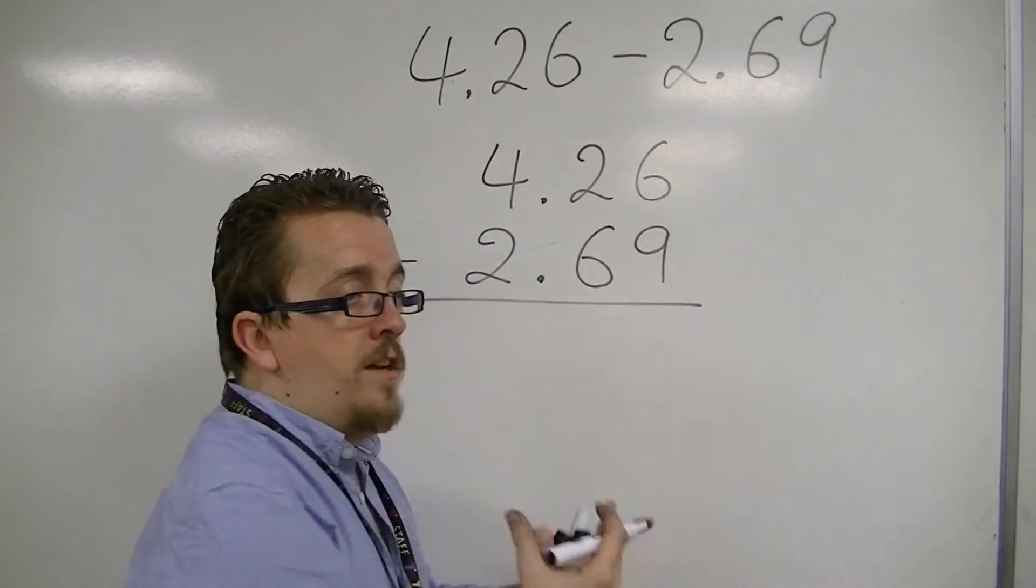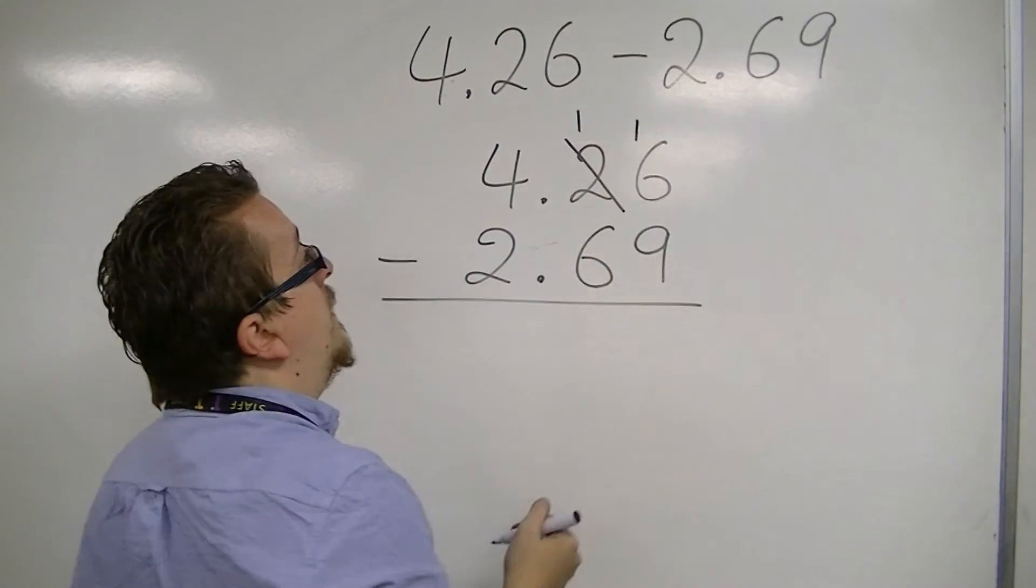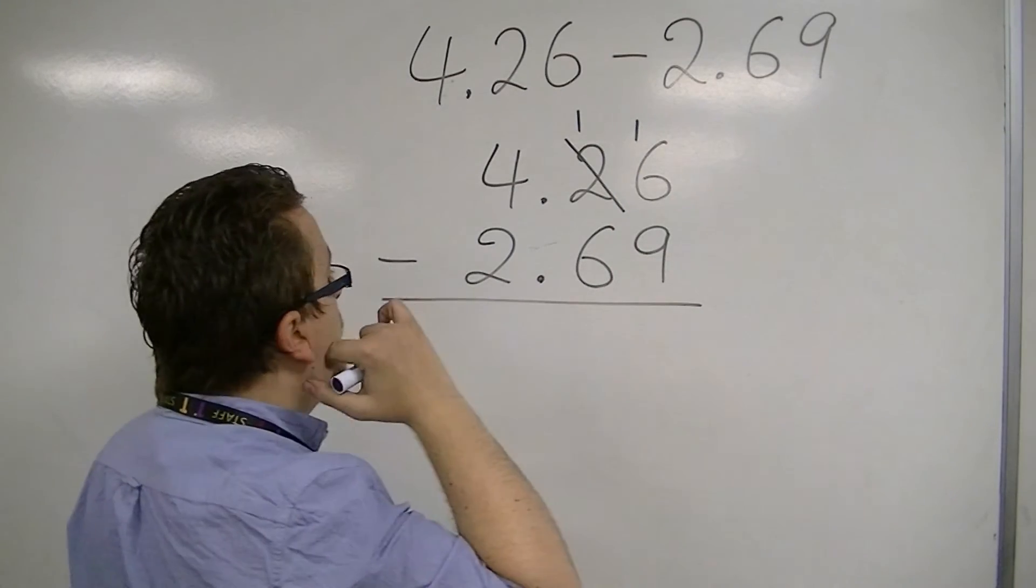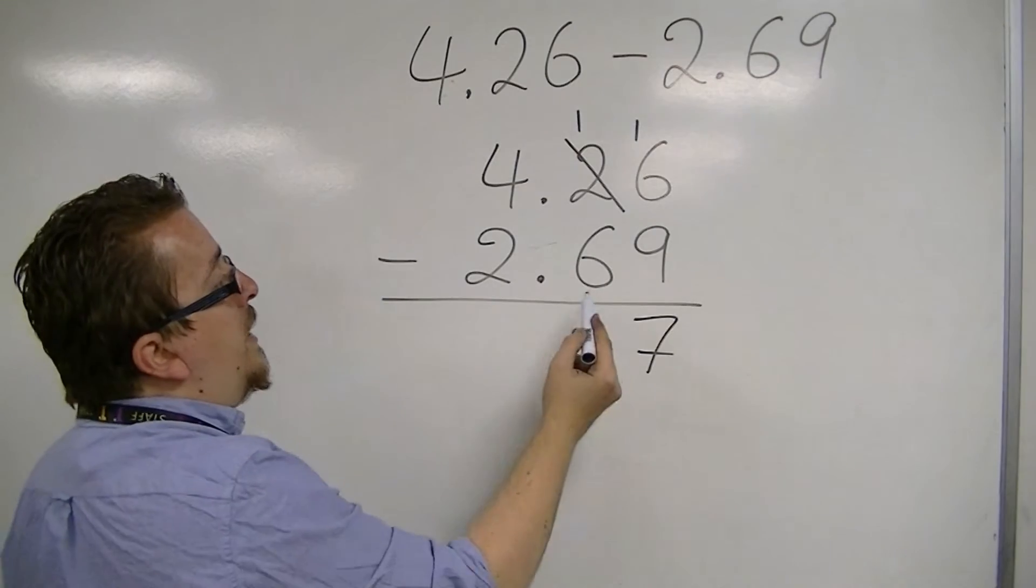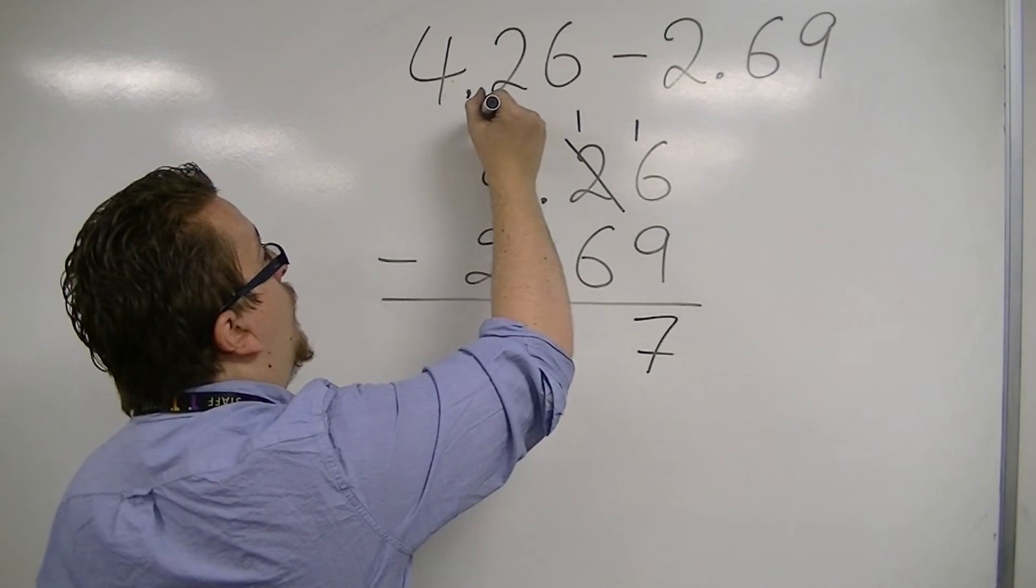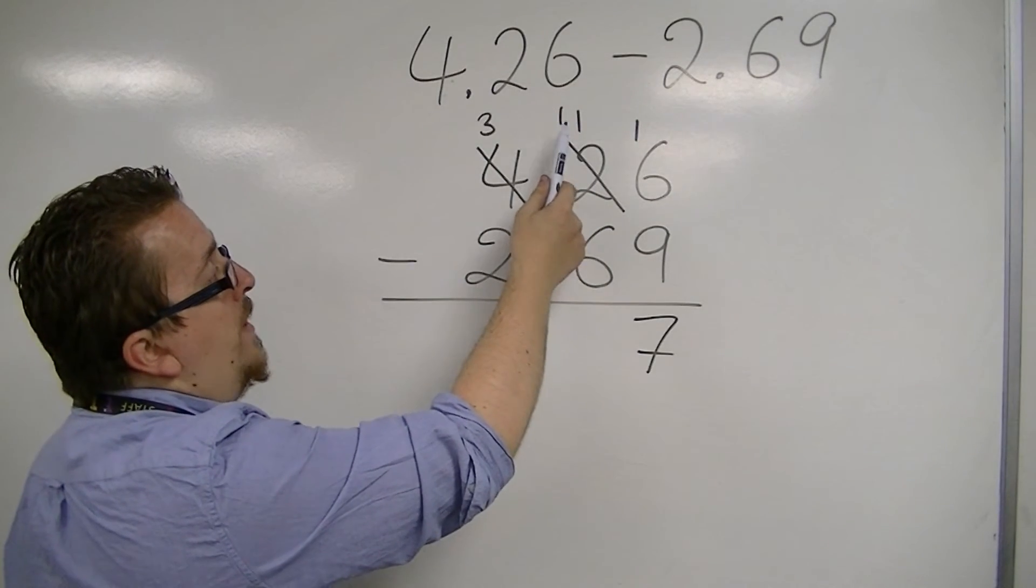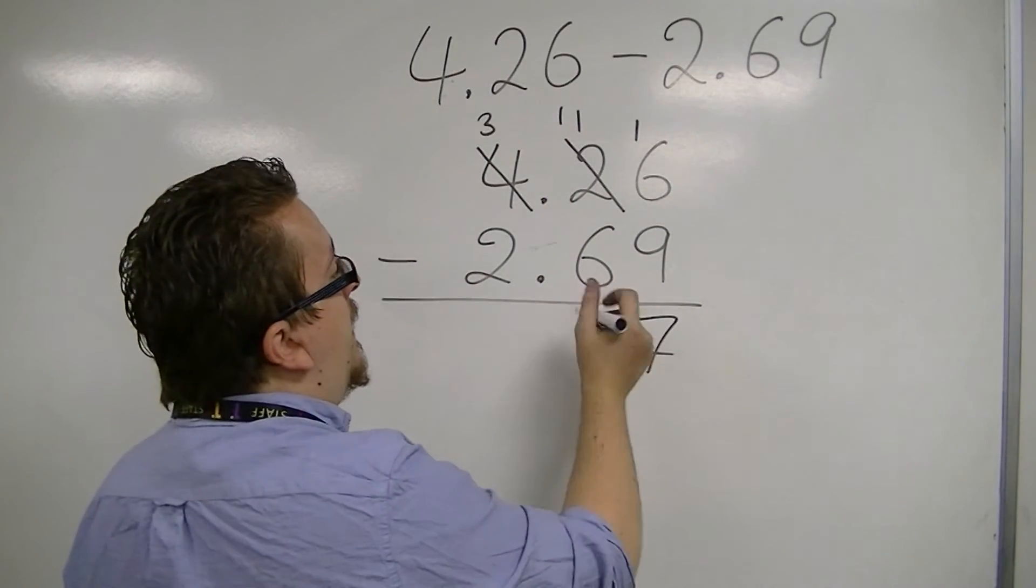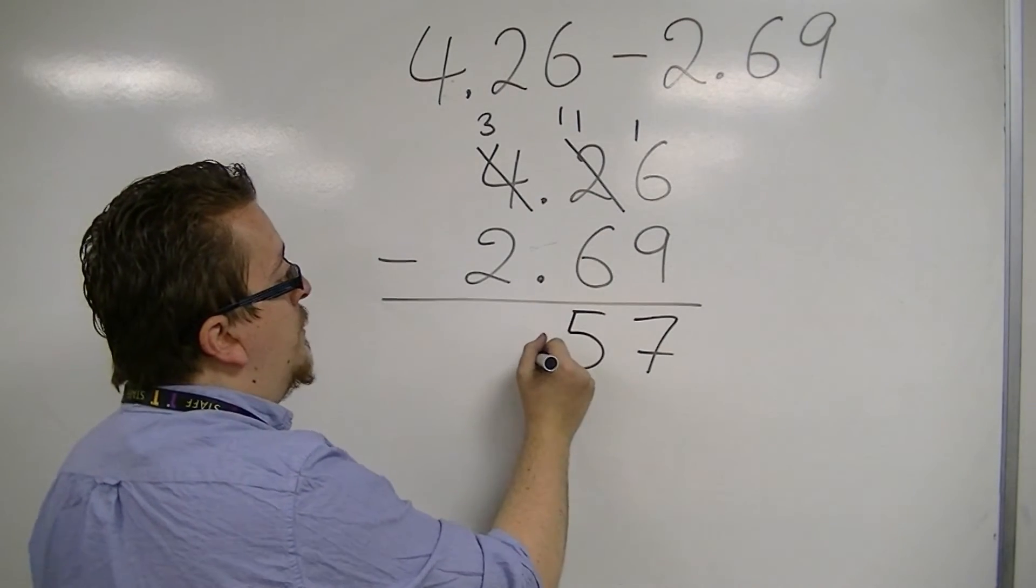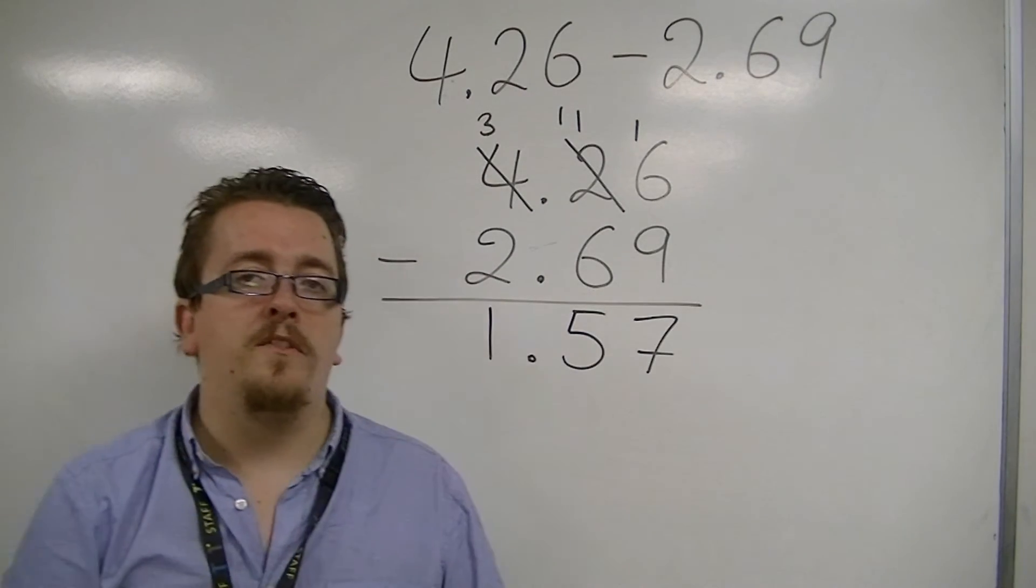6 take away 9 I can't do, so I need to borrow 1 from the 2. The 2 reduces to 1. And we now have 16 take away 9, which is 7. I have 1 take away 6, which I can't do, so I need to borrow 1 from the 4. So I now have 11 rather than 1. 11 take away 6 is 5. The decimal point follows down. 3 take away 2 is 1. 1.57.